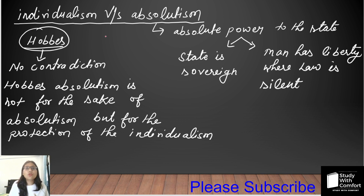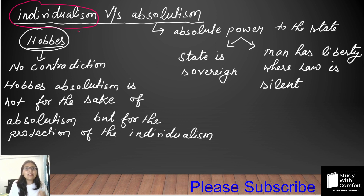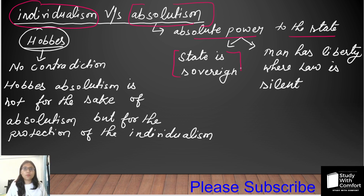In Hobbes's thoughts, you will see two contradictory political philosophies. On one hand, individualism — where Thomas Hobbes sees individual self-interest as supreme and the state's primary task is to protect the life of the individual. On the other hand, Thomas Hobbes also promotes absolutism as a political philosophy, giving the state absolute power. Absolute power of the state means that the state is supreme, maintaining law and order.